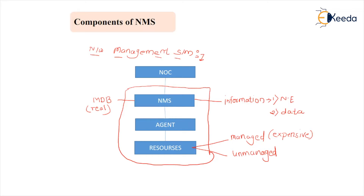It is interesting to analyze this network with a real-time example. We are all manageable or managed elements because we use network elements — like internet connectivity — while accepting all the rules of the distributor. Whatever package they provide, if it is convenient, we utilize it under particular rules, so we are the managed objects. There can be thousands, lakhs, millions, or billions of resources or customers present inside one network.